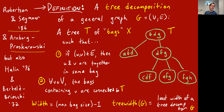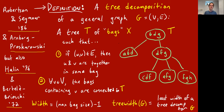Later people figured out that Halin in 1976 had defined an equivalent concept, and Bertele and Brioschi back in 1972 also defined an equivalent concept. So even though it looks very complicated, it must be natural if everybody is converging on the same definition.